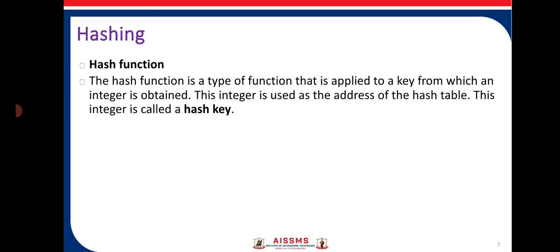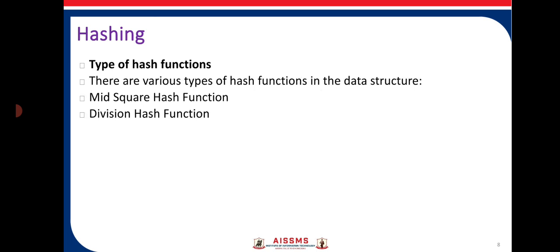The hash function is the core component with which hashing actually works. The hash function is a type of function applied to a key from which an integer is obtained. This integer is used as the address in the hash table, and it is also called the hash key. By applying a function to our values, an integer is derived that works as the address locator to store that value into the hash table.